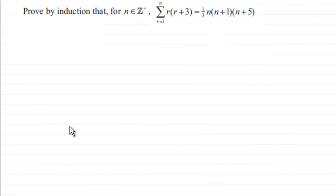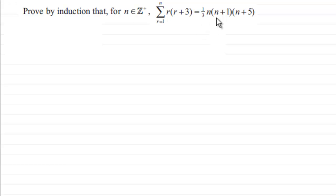Hi. What we've got in this example is to prove by induction that for n being any positive integer, the sum of r times r plus 3 going from r equals 1 to n equals a third n times n plus 1 times n plus 5. Give this a go — pause the video and come back when ready to check your work against my solution.